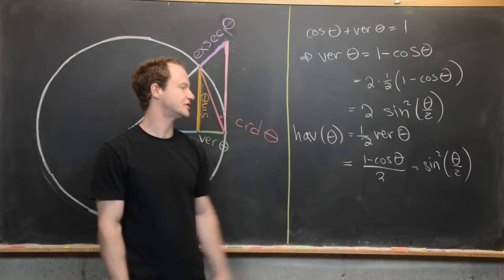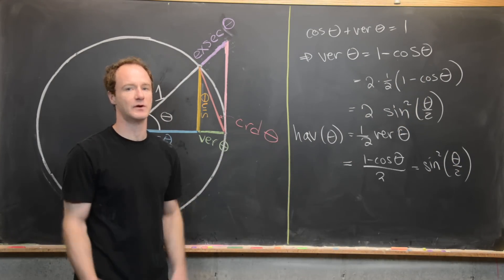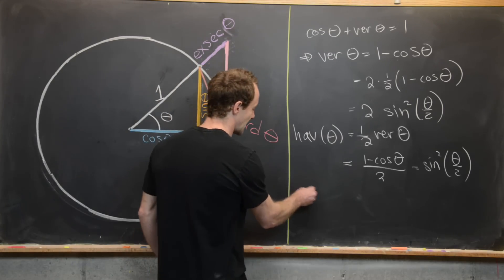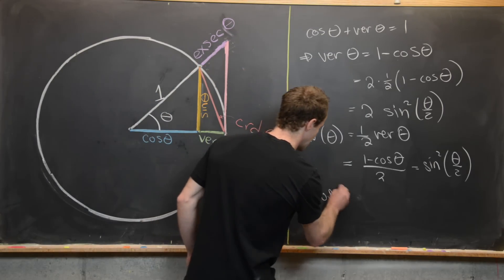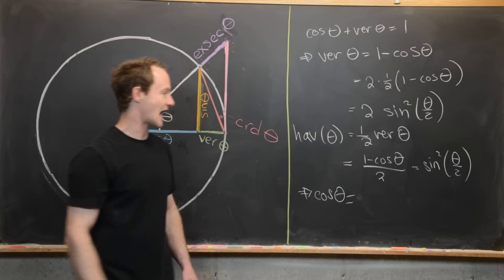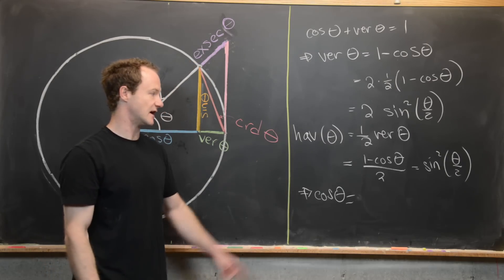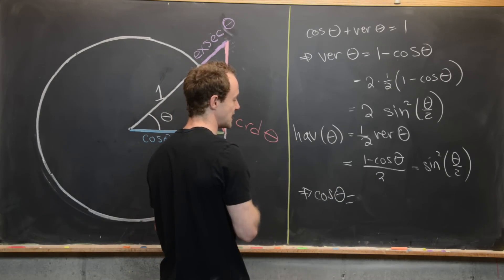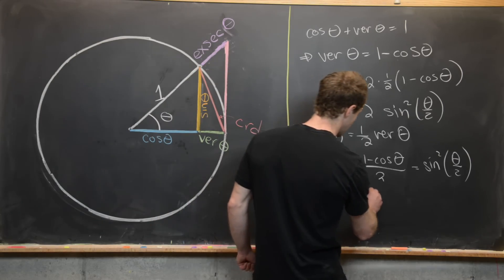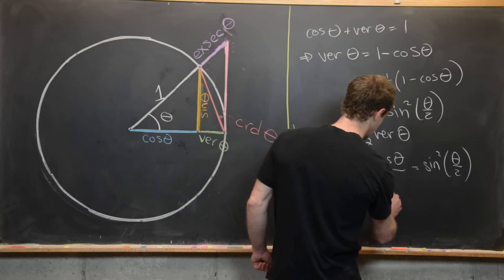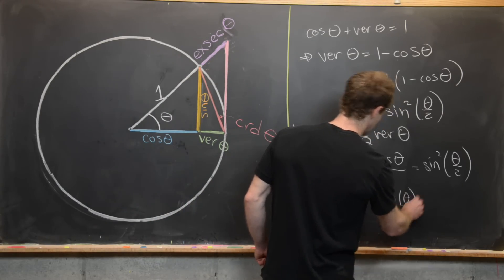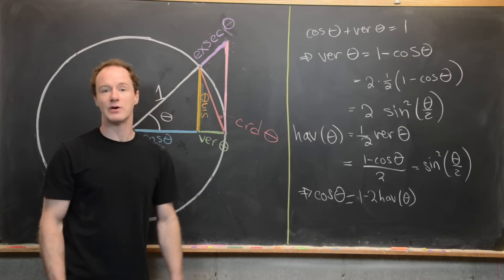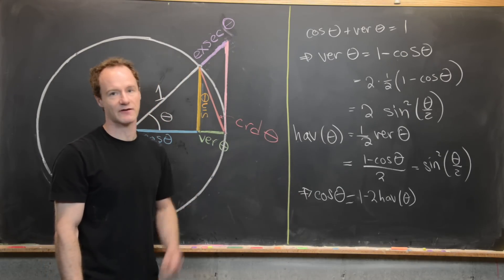This also allows us to write cosine theta in terms of the haversine. We can multiply through by 2, which gives us cosine theta = 1 − 2 times haversine theta. That's another common relationship between cosine and haversine.